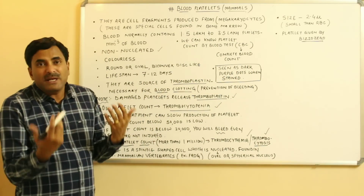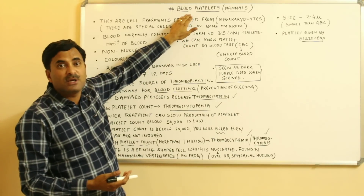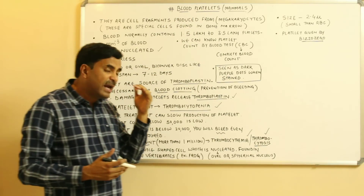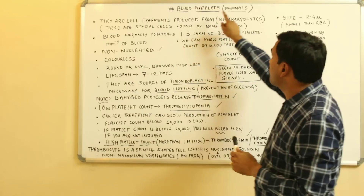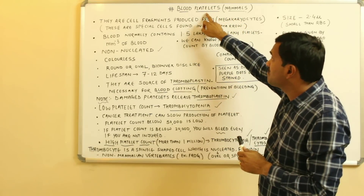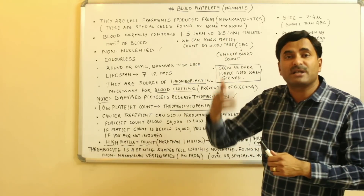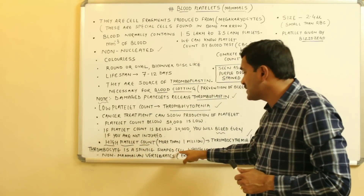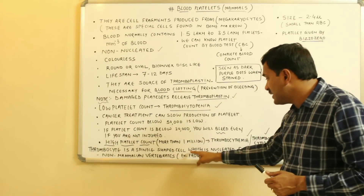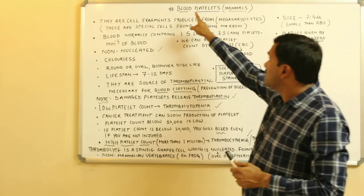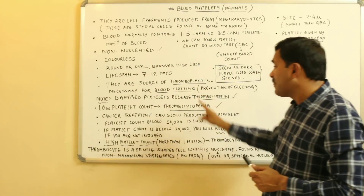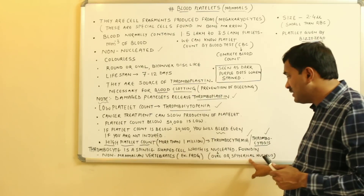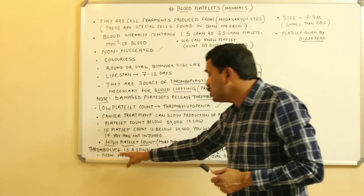In many books and common usage, blood platelets are called thrombocytes, but this is not actually accurate. The term 'thrombocyte' is not used for mammals — for mammals we use the term 'platelets.' For other vertebrates, we use the term 'thrombocyte.' Thrombocytes are spindle-shaped, nucleated cells — unlike blood platelets, which are non-nucleated. The nucleus of thrombocytes is oval or spherical.